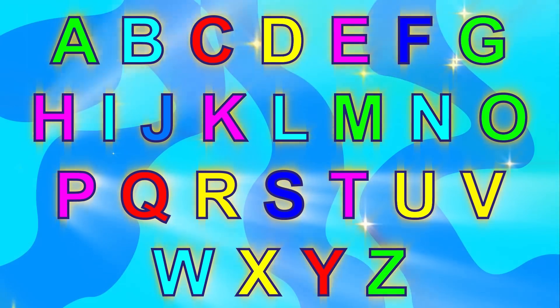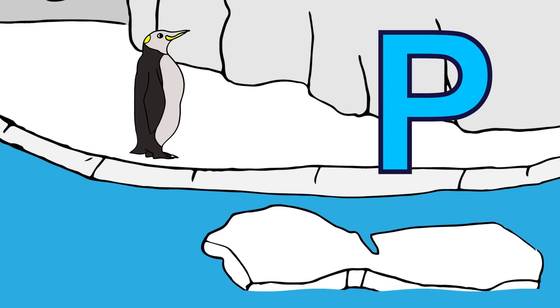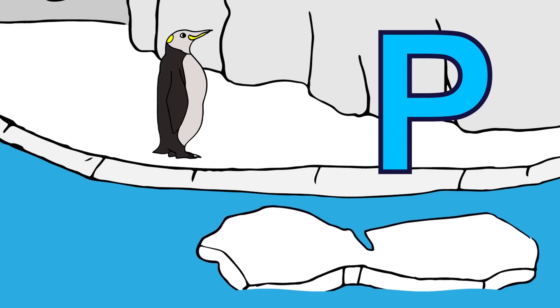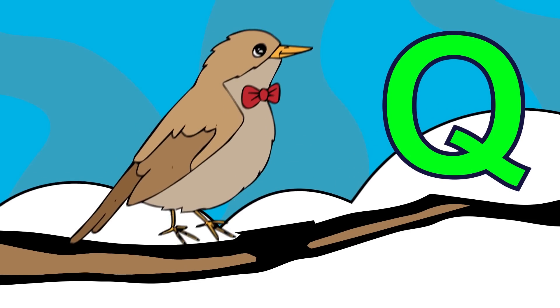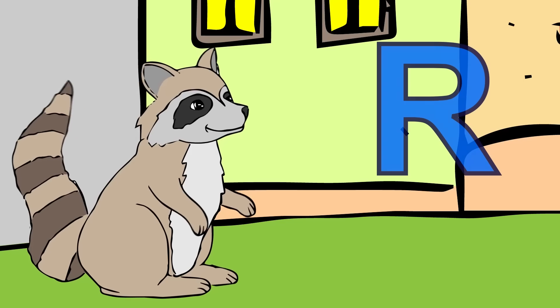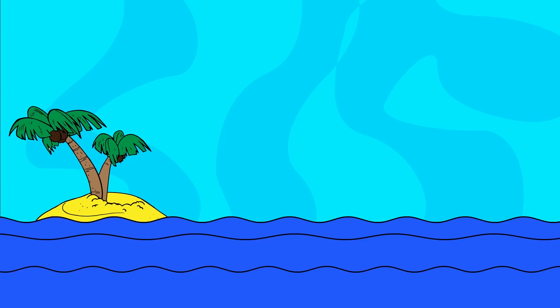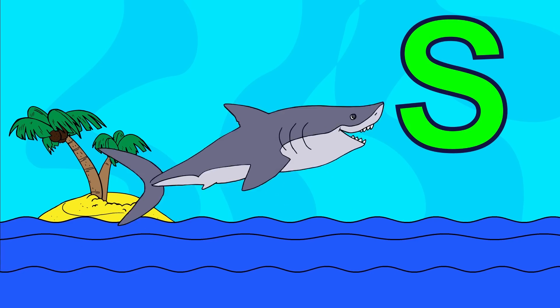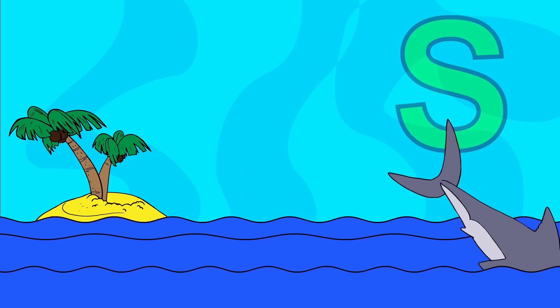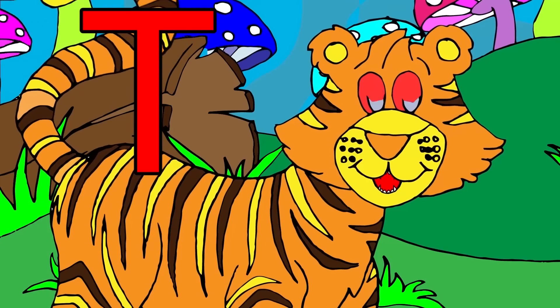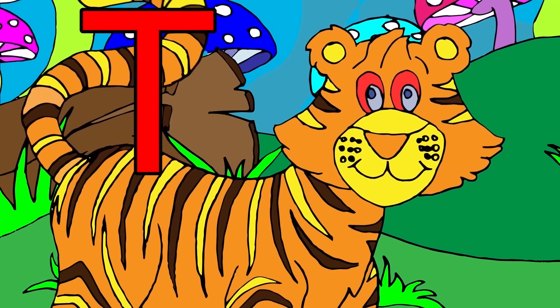P for penguin, Q for quail, R for raccoon, S for shark, T for tiger.